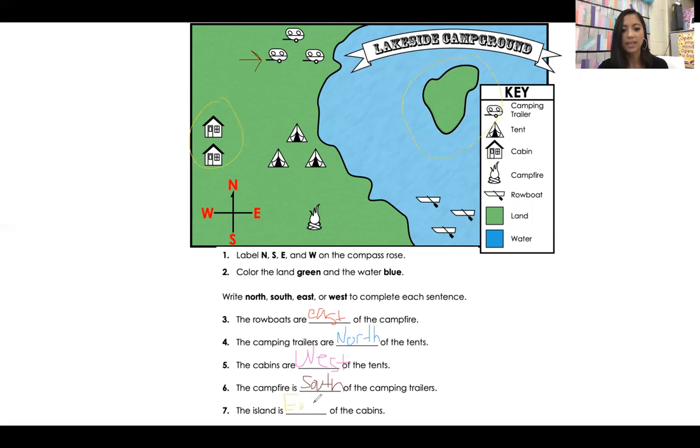So a map key helps direct us to understand what is in our map, what is important in our map, and we have to remember to use the compass rose to help us read the map. Thank you guys.